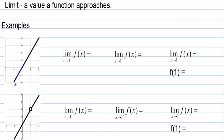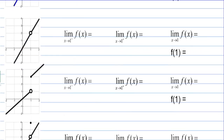Let's look at a line that goes through the point (1, 2). The limit as x approaches 1 from the left — the little minus sign means approaching from the left — as we approach x = 1, the y value is approaching 2. So that answer is 2. As we approach 1 from the right, the function is also approaching 2. Since the left-hand limit and the right-hand limit are the same, the limit at 1 is 2 as well.